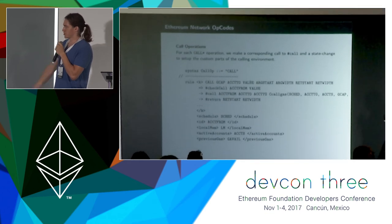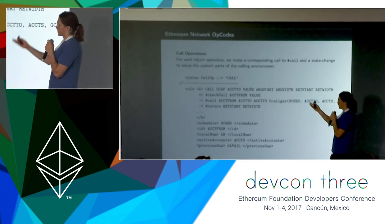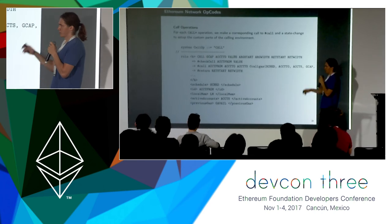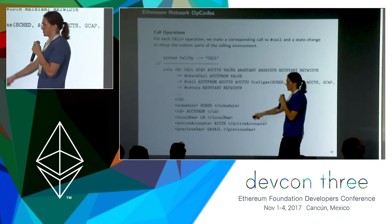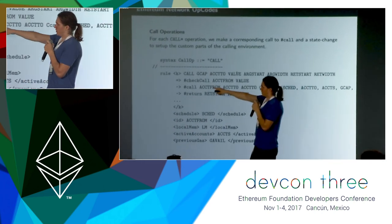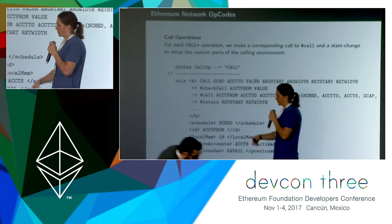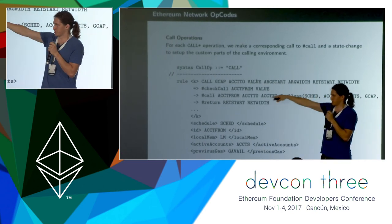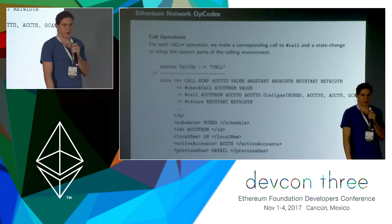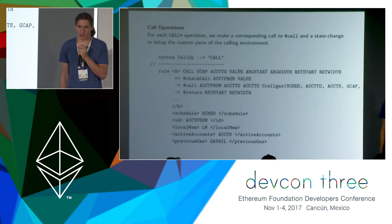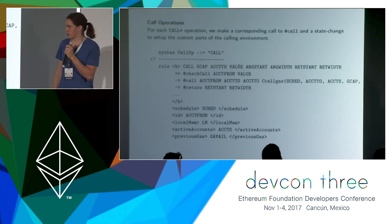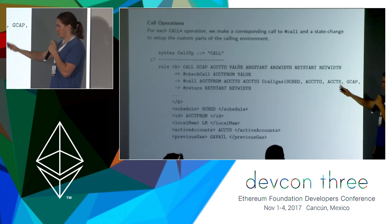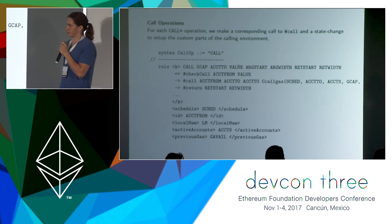Here's an example of a bigger network opcode: the call opcode. It's running off the edge of the screen, but basically we define a bunch of internal operators to help with the call opcode — that's pretty straightforward — and then these internals can be reused for the delegate call opcode or probably for static call as well.